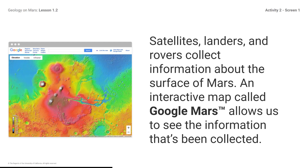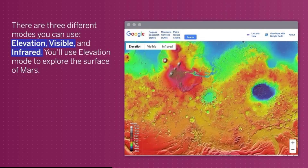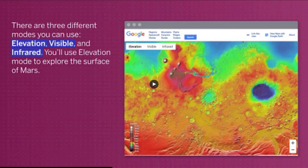Satellites, landers, and rovers collect information about the surface of Mars. An interactive map called Google Mars allows us to see the information that's been collected. Over the past 50 years, scientists have used different instruments and cameras to collect this information. Play the video found in Lesson 1.2, Activity 1 slides, in the drive folder.